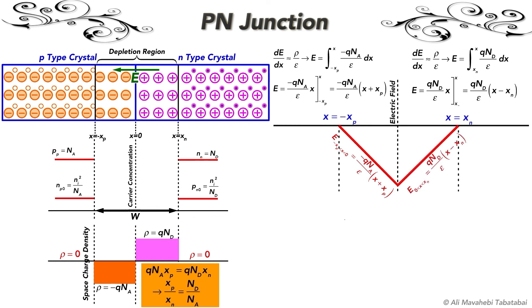So by using Poisson's equation, we would be able to illustrate the electric field inside the depletion region. This field is zero outside the depletion region.